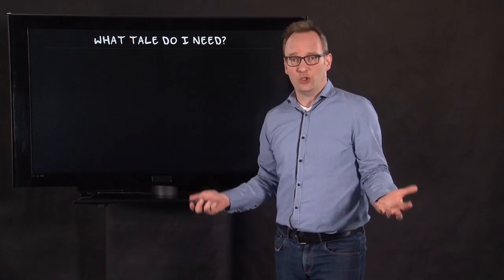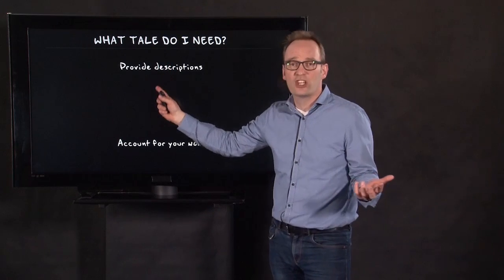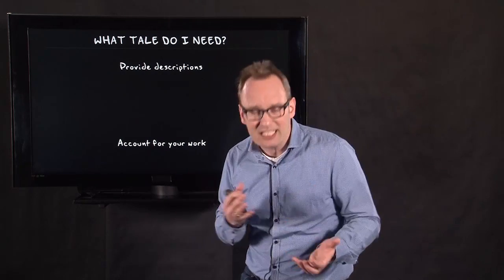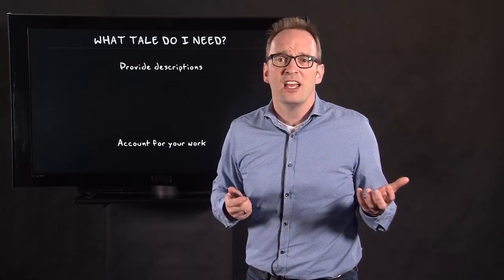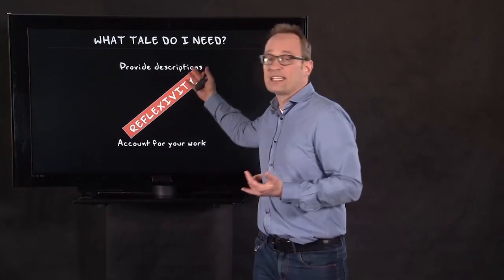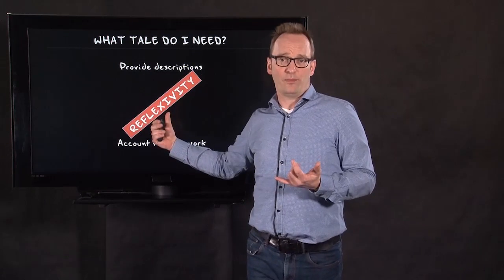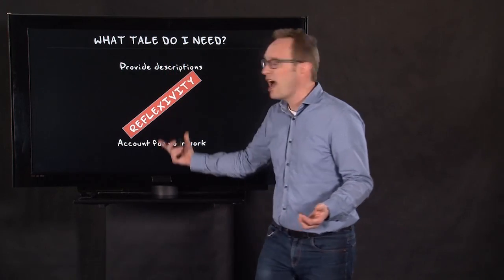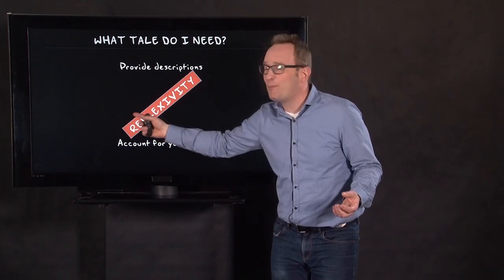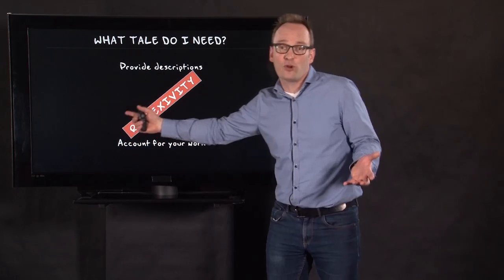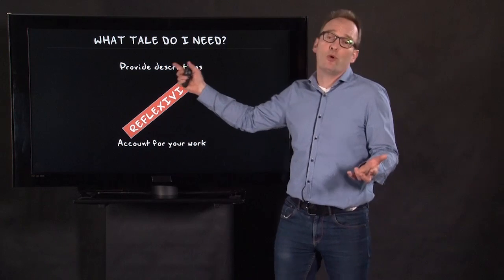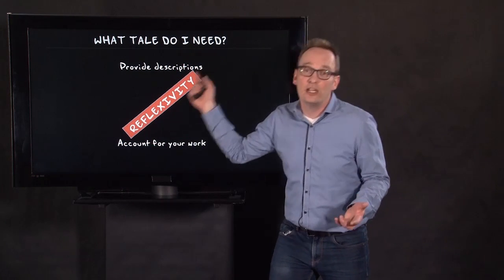So what writing is about, what tale do I need to tell? You have to provide descriptions and you have to account for your work. And in this impressionist tale of Van Maanen, you use reflexivity as a bridge between both. And this is also what I would suggest to you: provide the description, account for your work. Maybe you're a bit more in the confessional corner or you're a bit more in the realist corner, but at least deal with both aspects of writing.